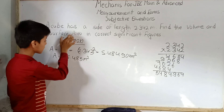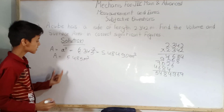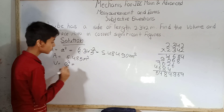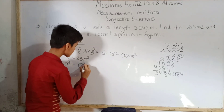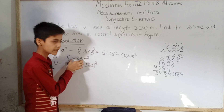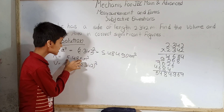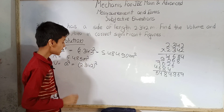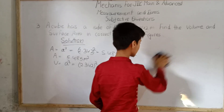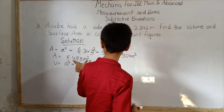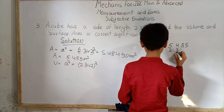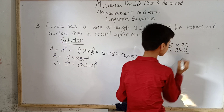Now we find the volume. The formula for volume of a cube is A cubed, which equals 2.342 whole cubed. Since we already have 2.342 squared equals 5.485, we just multiply 5.485 by 2.342 to get the cube.